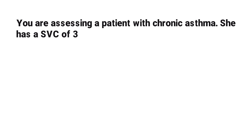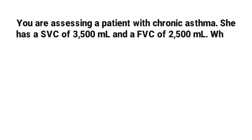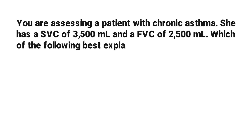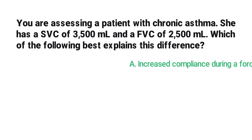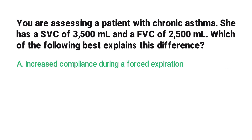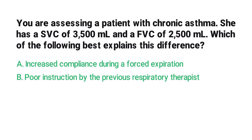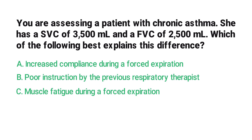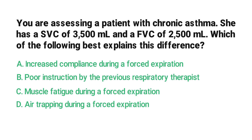You are assessing a patient with chronic asthma. She has a slow vital capacity of 3500 milliliters and a forced vital capacity of 2500 milliliters. Which of the following best explains this difference? A) increased compliance during forced expiration, B) poor instruction by the previous respiratory therapist, C) muscle fatigue during forced expiration, D) air trapping during forced expiration.